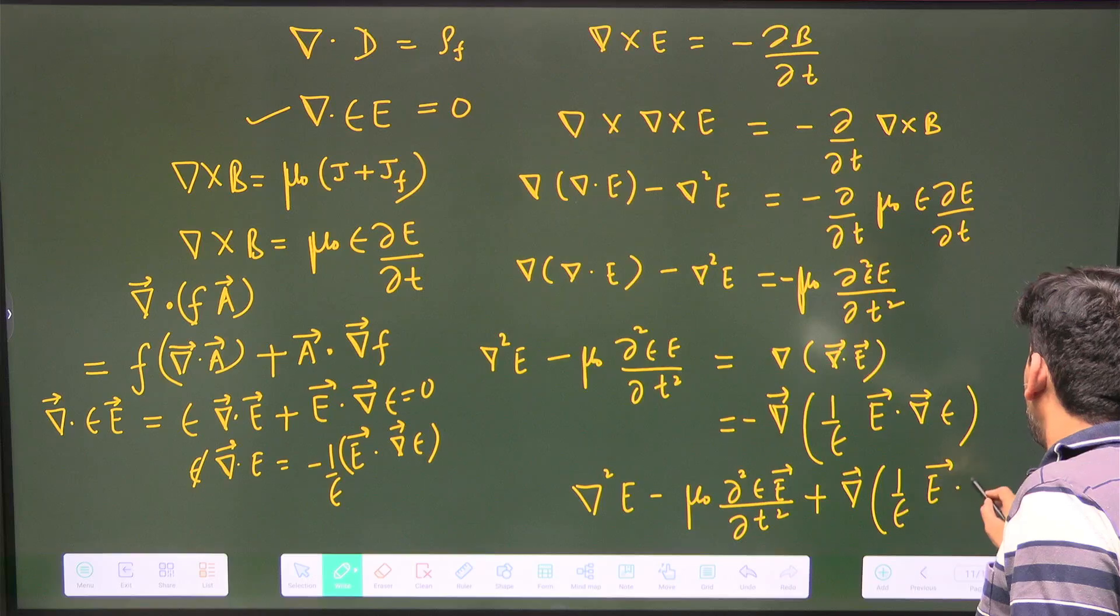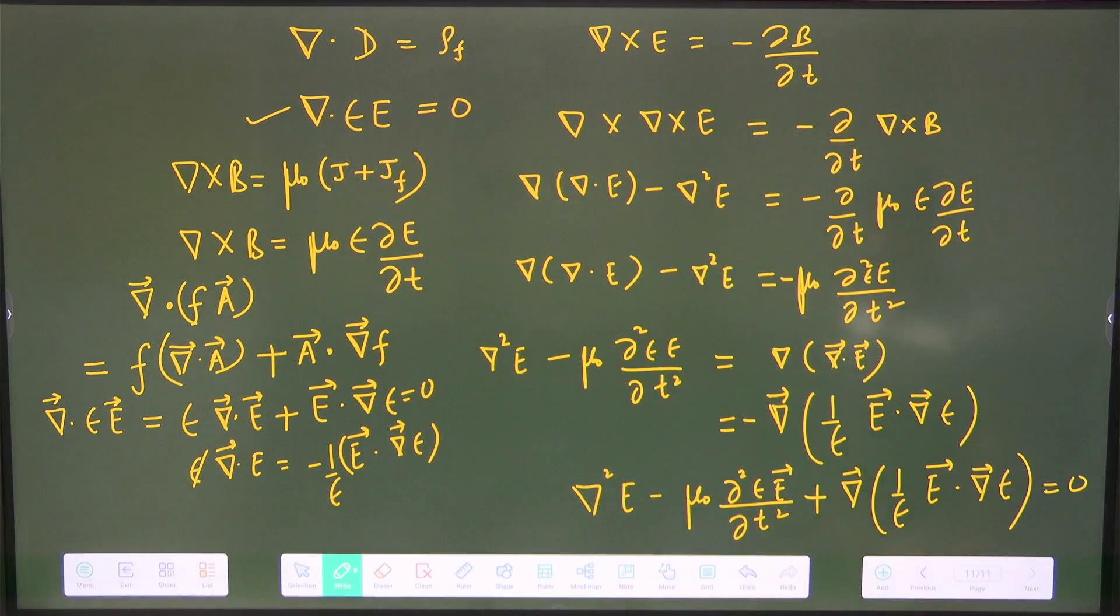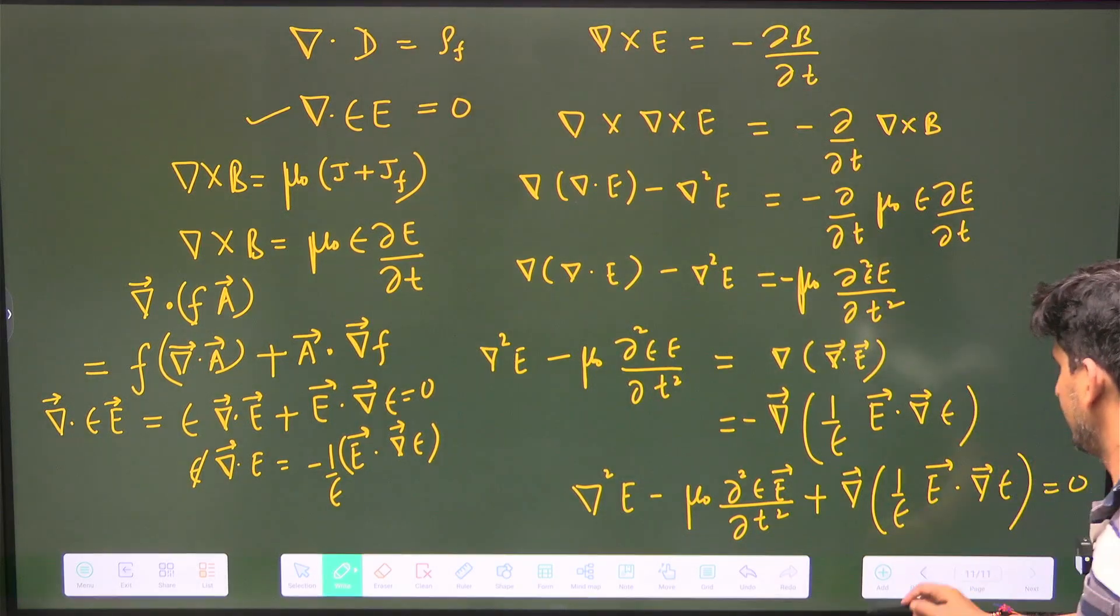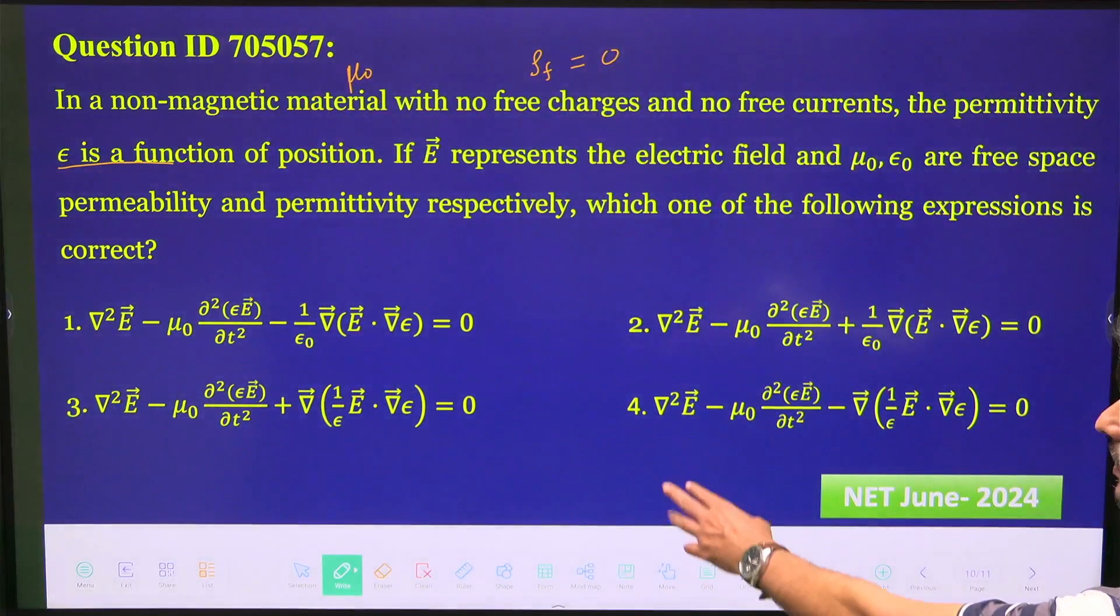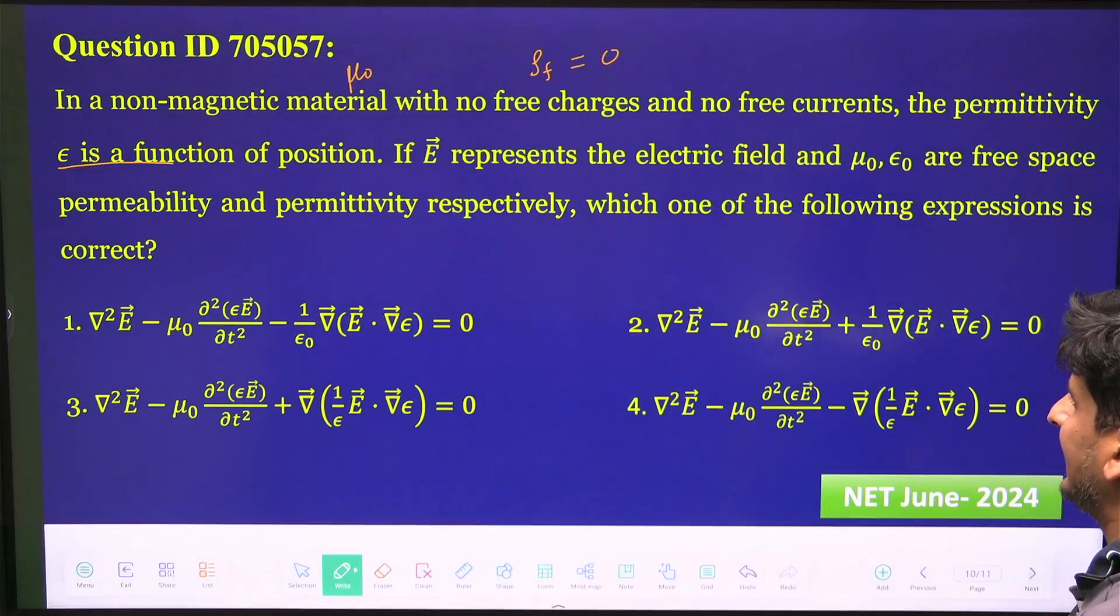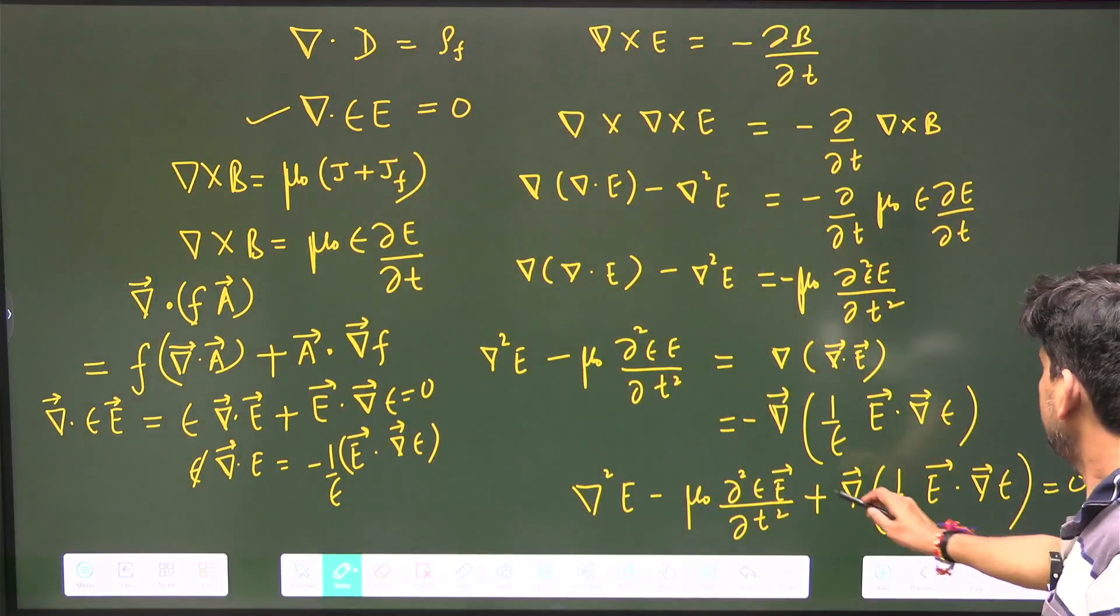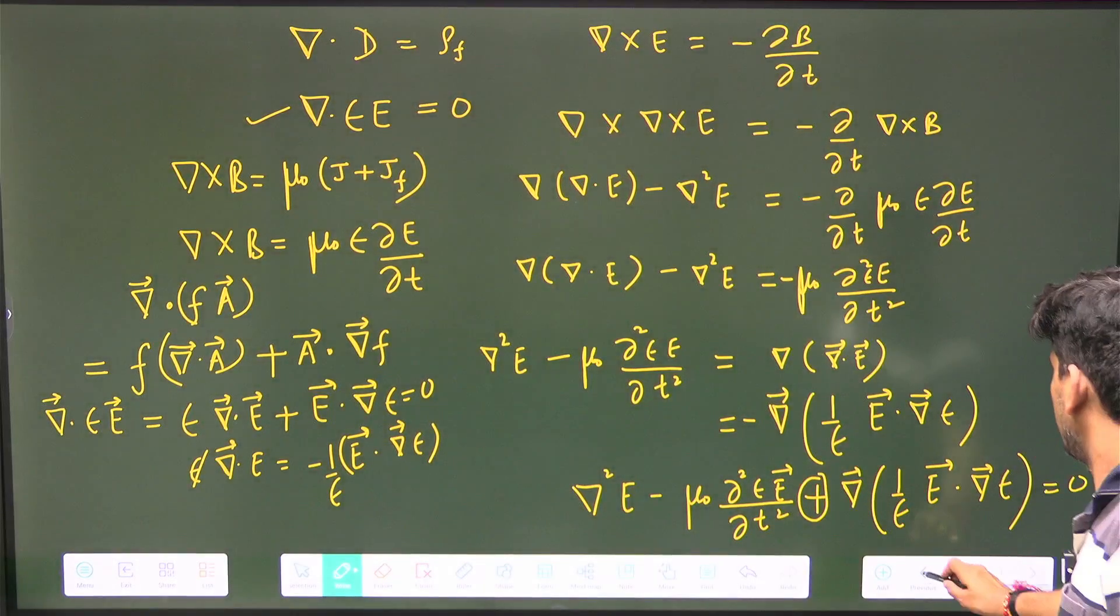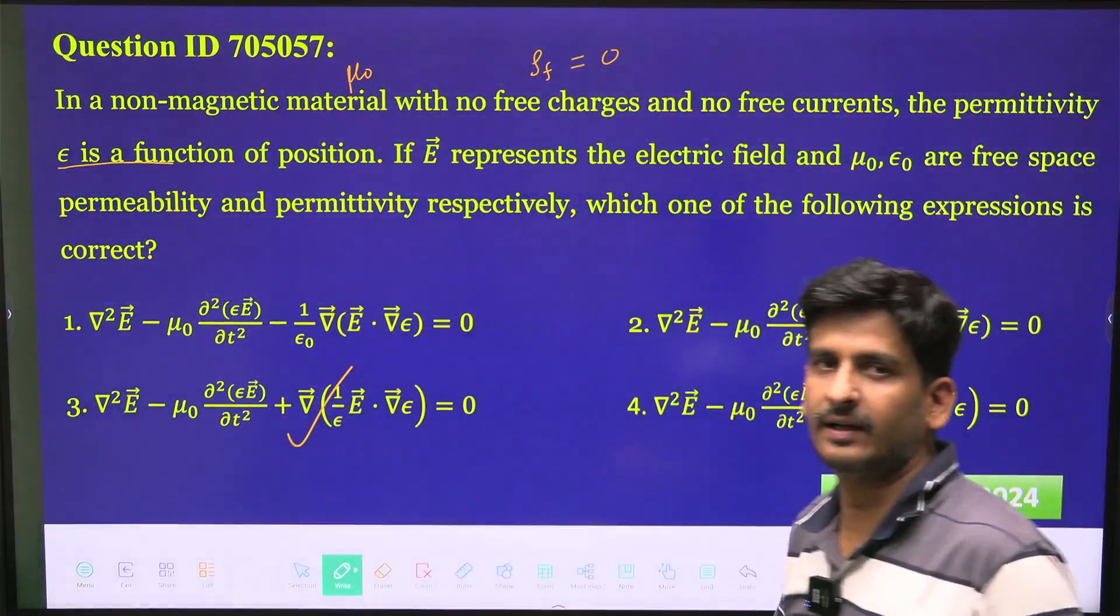Just check in the options. Del square E minus μ₀ del² by del t² is in every option, no problem. And grad of 1/ε, because it goes to the left side it becomes positive. You can see here, this becomes positive, so this option with positive sign is correct. This is the correct answer.